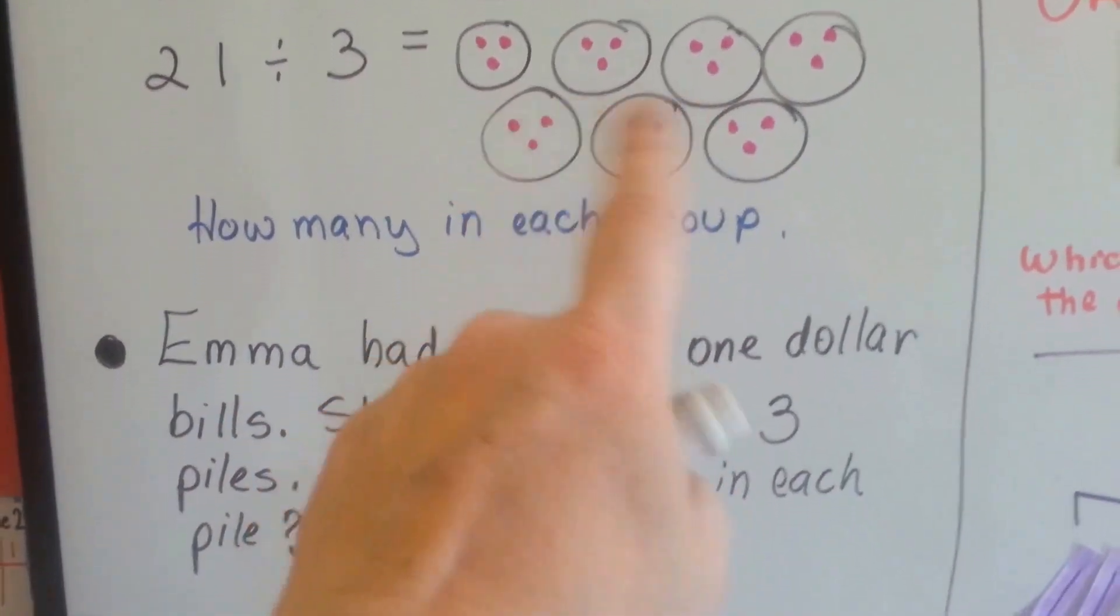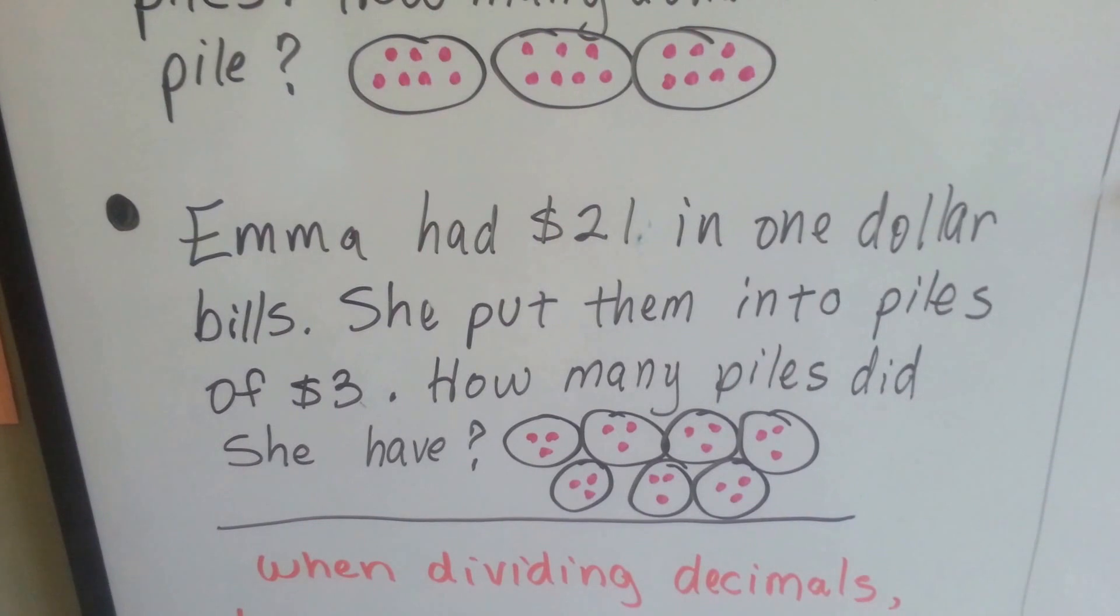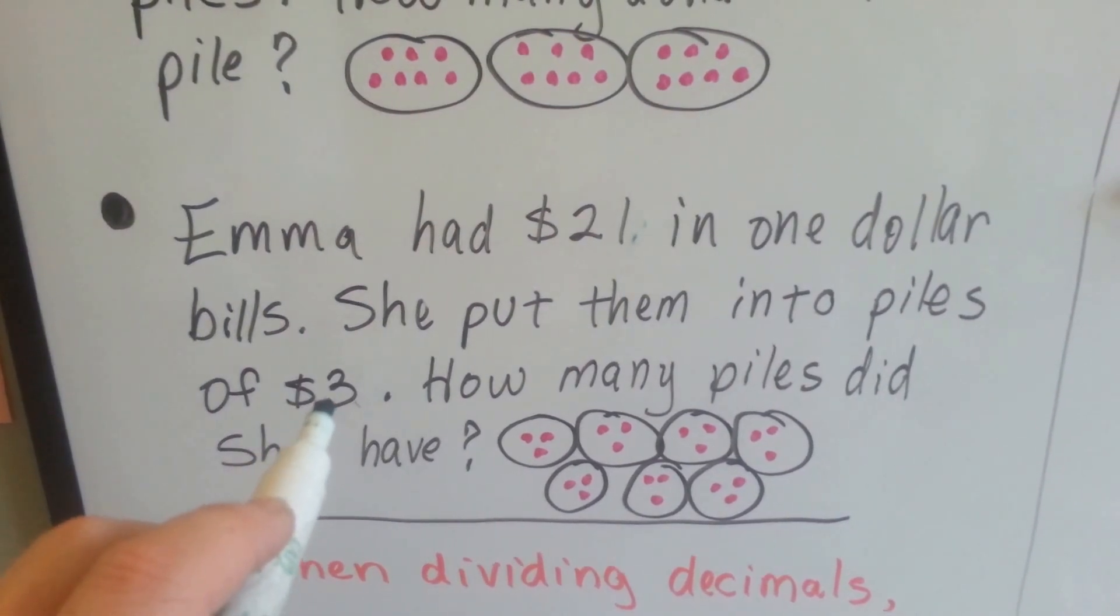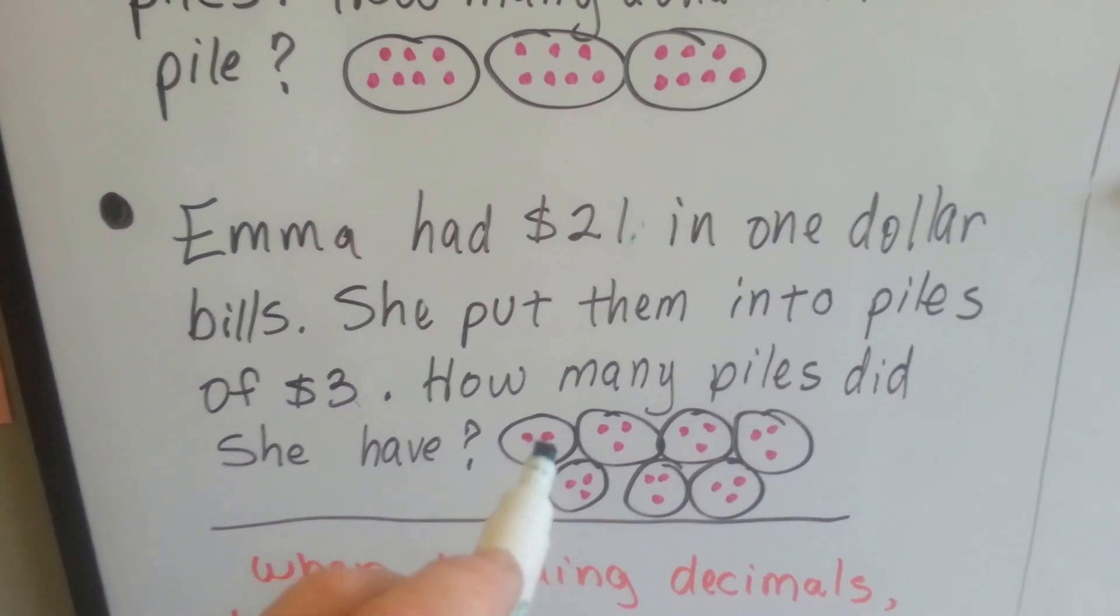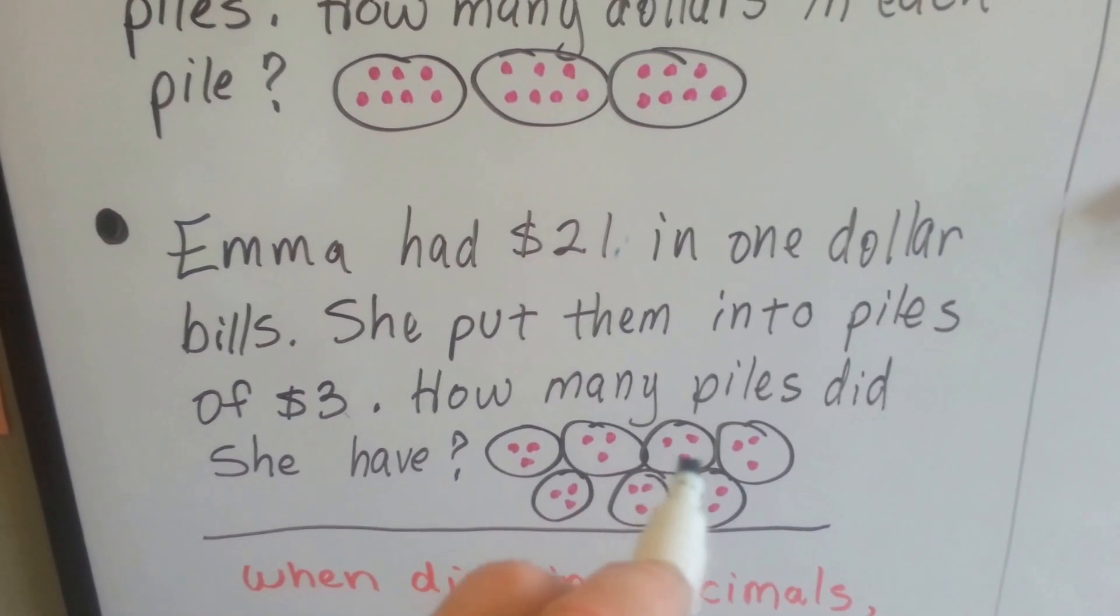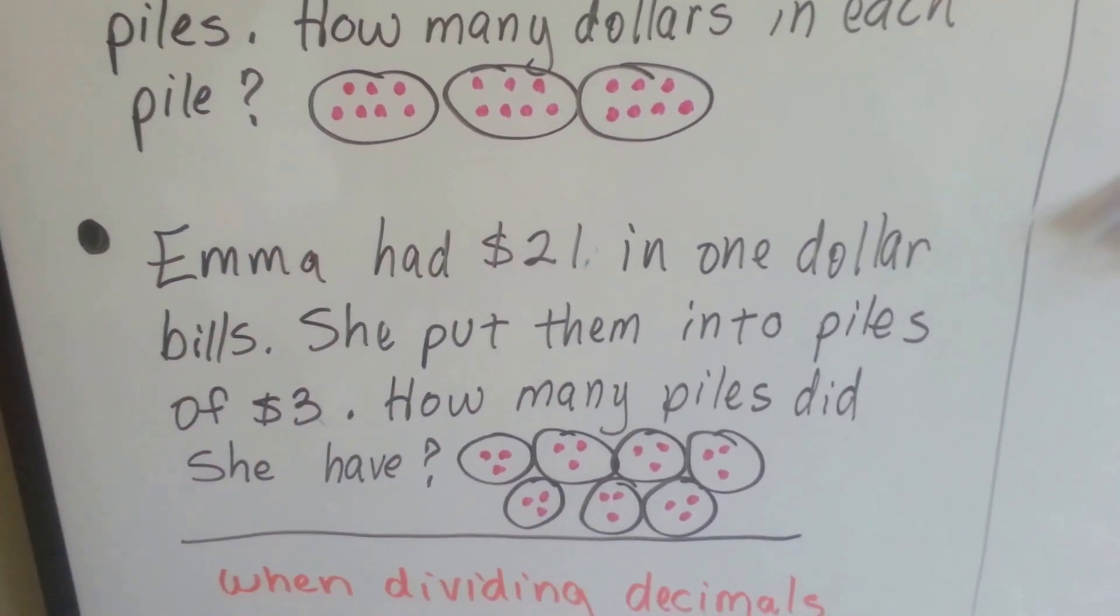And then for this one it would be Emma had $21 in $1 bills and she put them into piles of $3. How many piles did she have? So now we have piles with $3 in them. See the difference? This one is three with seven in it. This one's seven with three in it.